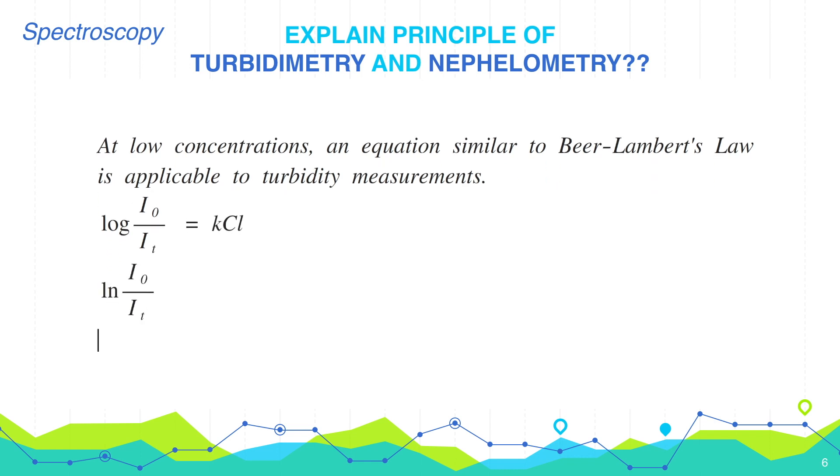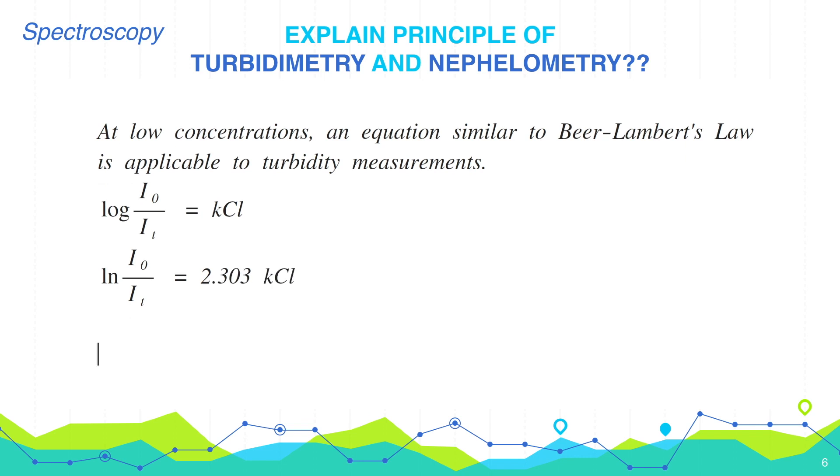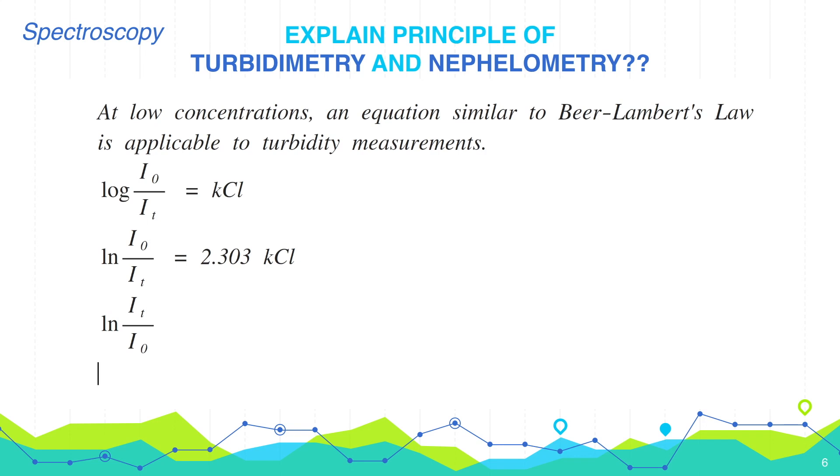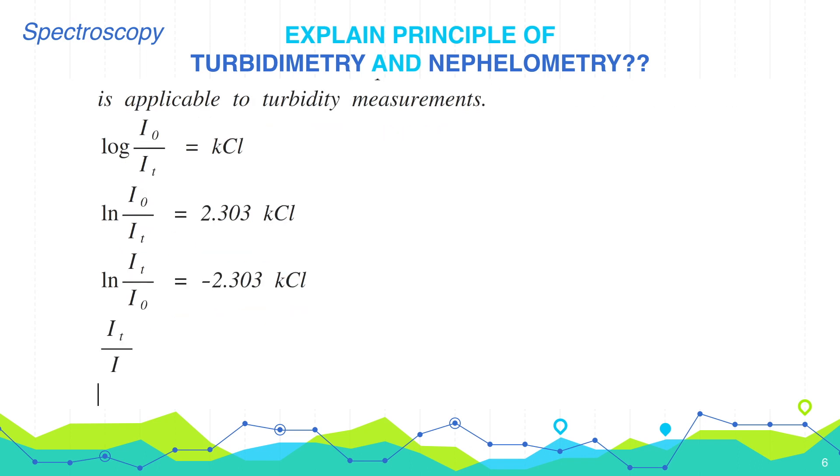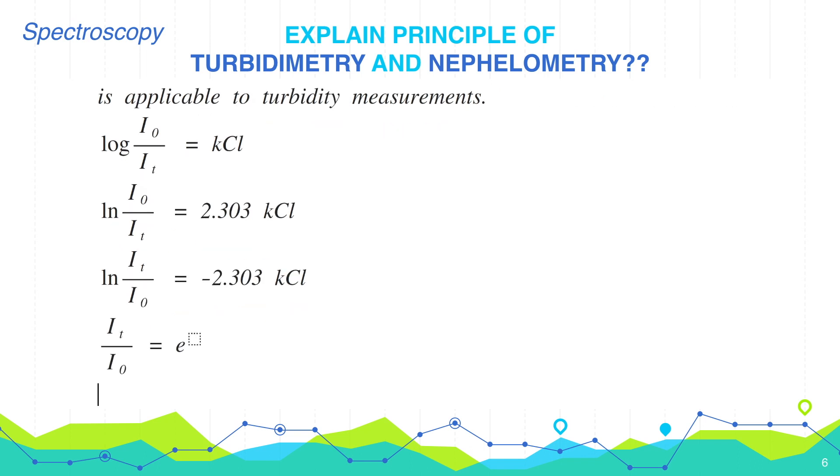Therefore, ln of i0 by it is equals to 2.303 k c l. Let's inverse i0 by it. So ln of it by i0 is equals to minus 2.303 k c l. Therefore, it by i0 is equals to e raised to minus 2.303 k c l.